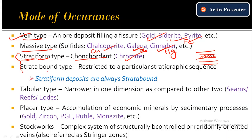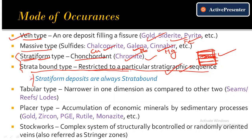A strata bound deposit is restricted to a particular stratigraphic sequence — bounded by an overlying and underlying stratigraphic sequence. A deposit can be both stratiform and strata bound: layered (stratiform) and also restricted to a specific stratigraphic sequence (strata bound). All stratiform deposits are strata bound, but all strata bound deposits are not necessarily stratiform.